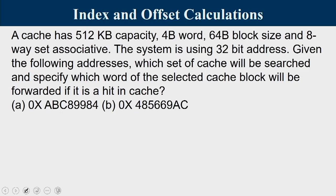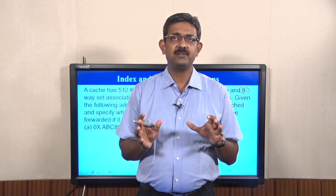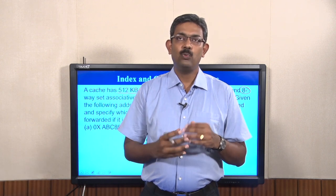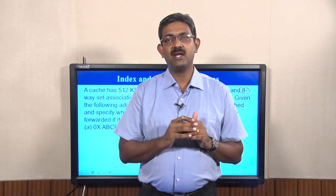The second question is on index and offset calculation. A cache has 512KB capacity, 4-byte words, 64-byte blocks, and is 8-way associative, using a 32-bit address. Given certain addresses, determine which cache set will be searched and which word of the selected cache block will be forwarded on a hit. The cache localizes its search to limited locations to respond quickly to processor requests.